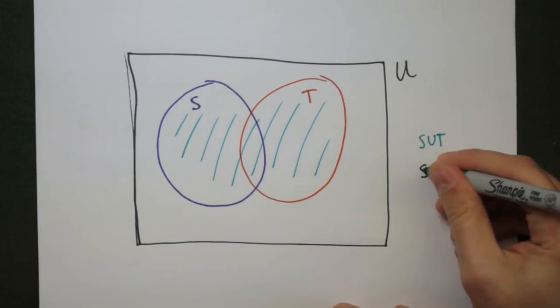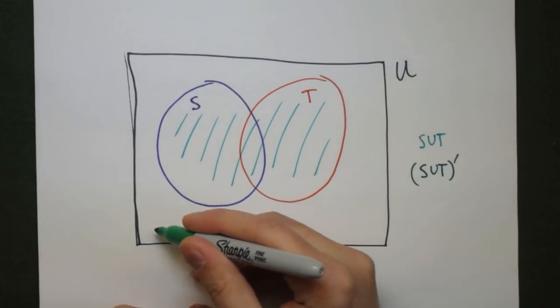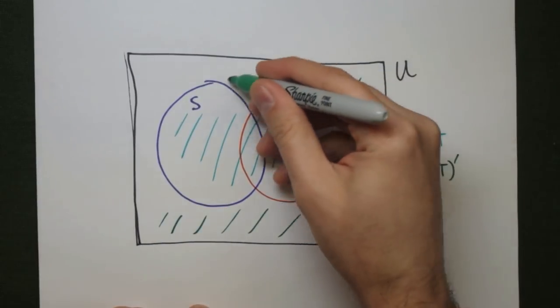The complement of S union T, then, is going to be everything that's not already shaded. That's everything outside of the two circles.